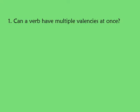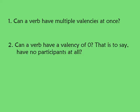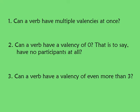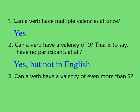Three common questions about valency are: Can a verb have multiple valencies at once? Can a verb have a valency of zero — that is, have no participants at all? Or can a verb have a valency of even more than three? The answers are: yes; yes, but not in English; and kind of.